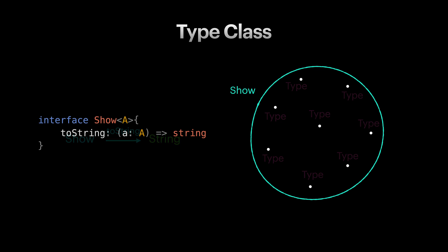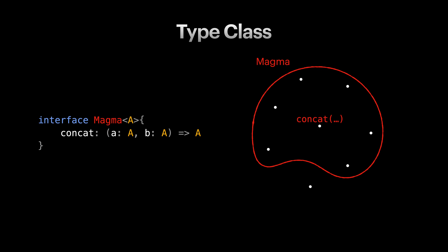We've already seen other examples of type classes over concrete types in previous videos. If you remember, magma is any data type A that supports concat operation. It receives two inputs of a same type and it knows how to combine them into another value in the same type.